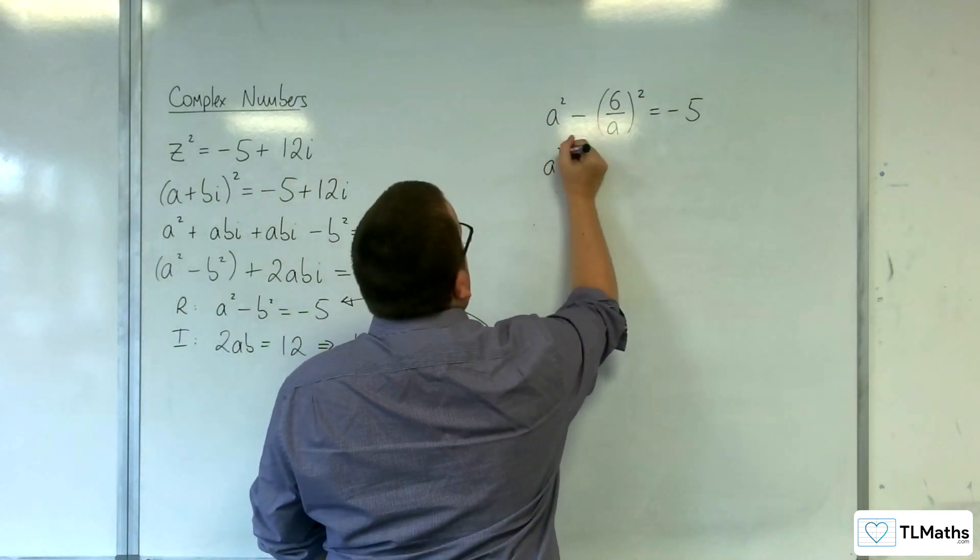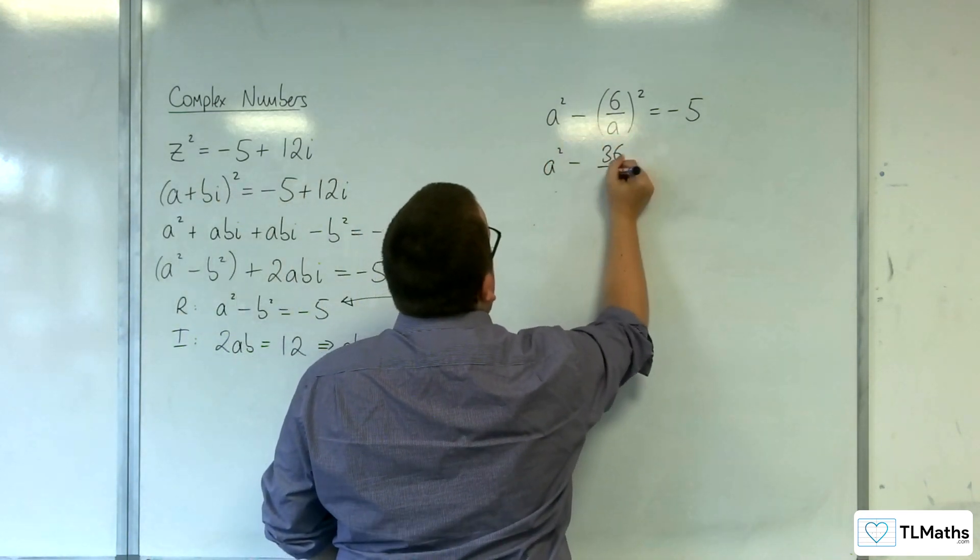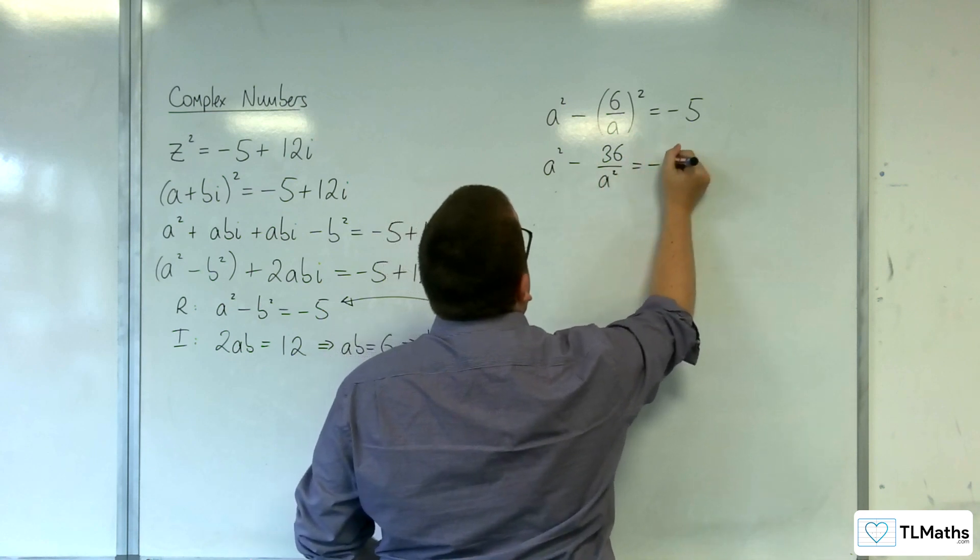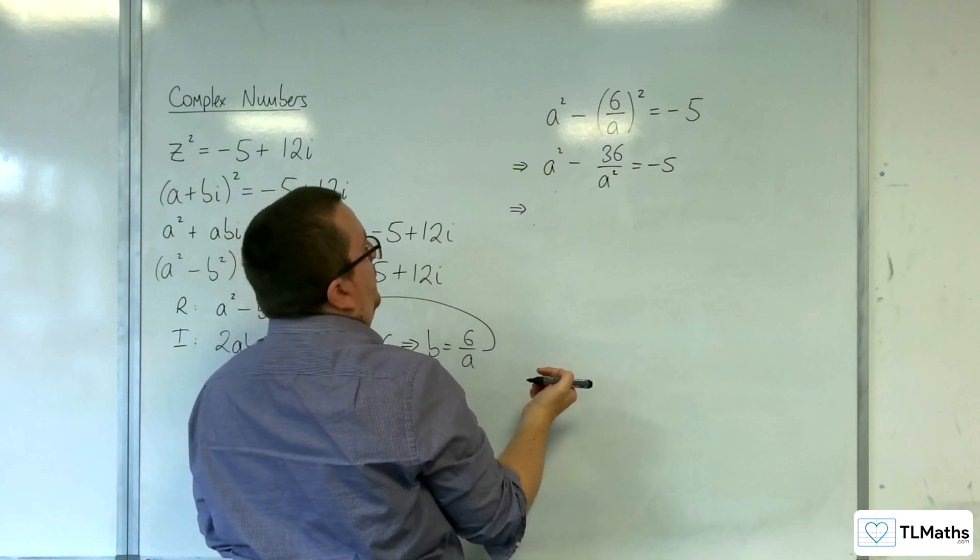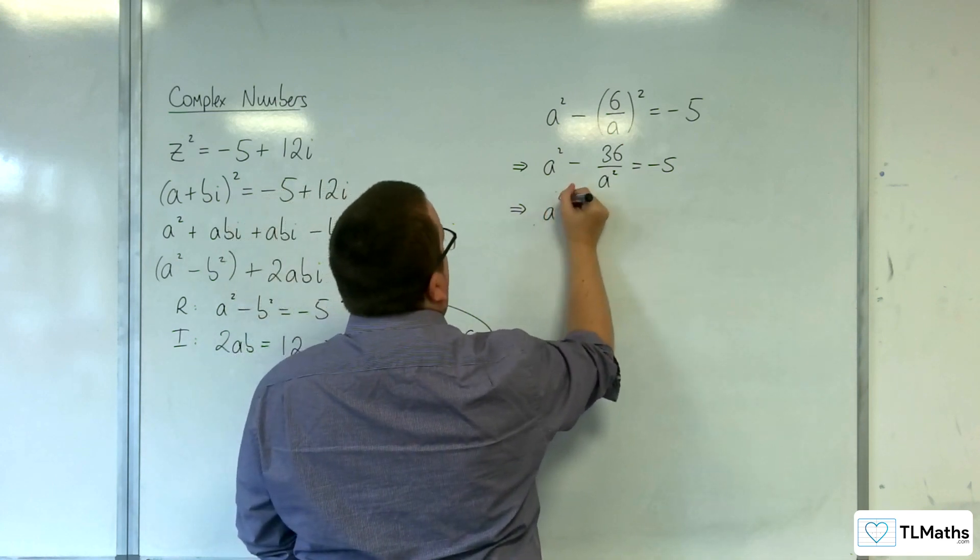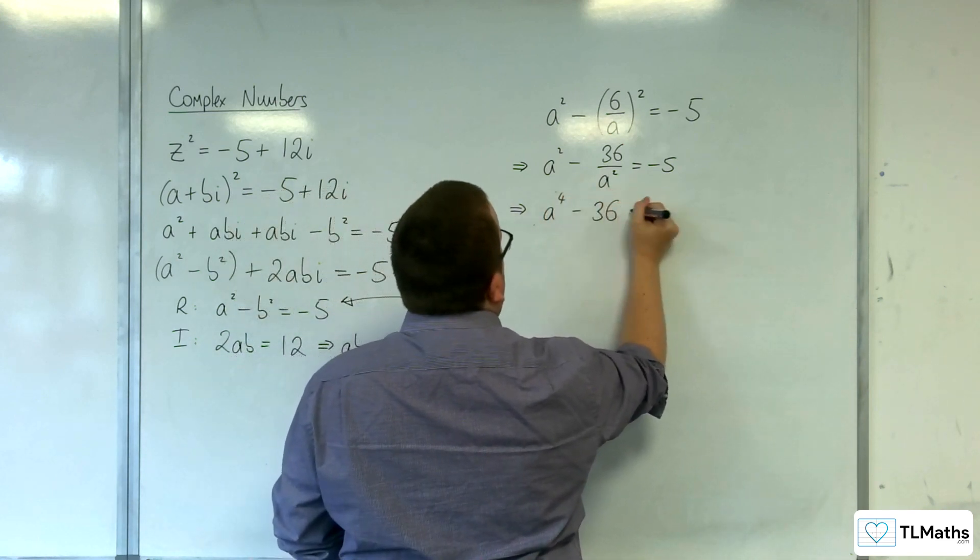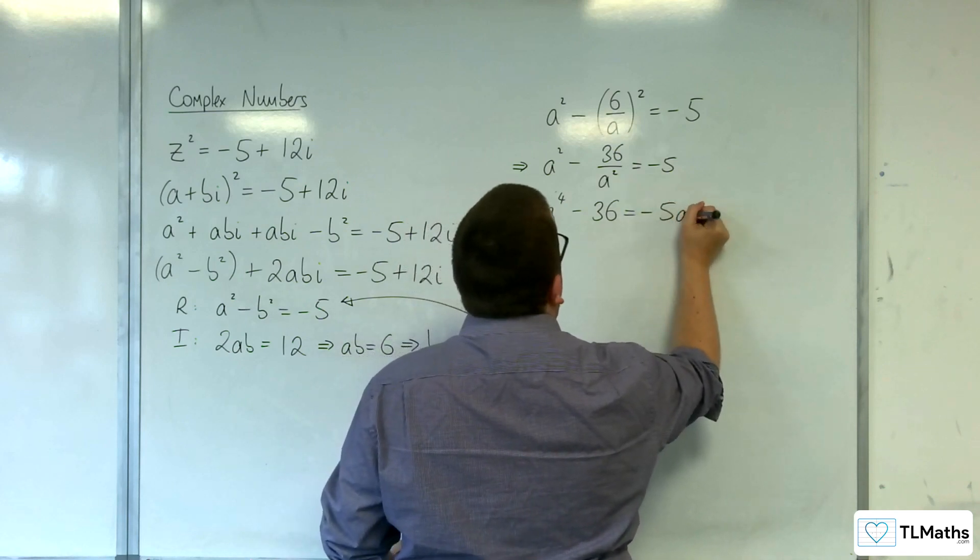So we've got the a² take away b². So 6 over a all squared, and that's going to be equal to -5. So a² take away 36 over a² is equal to -5.